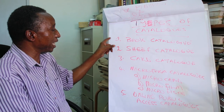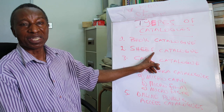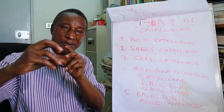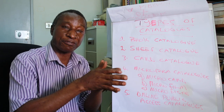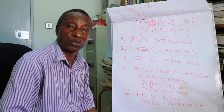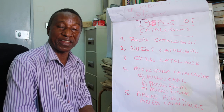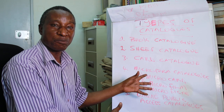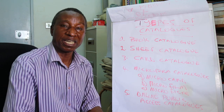Book catalogs were surpassed or replaced by the sheaf catalog. A sheaf catalog is a set of loose sheets or strips of paper where the catalog entries were written and then filed in the form of an expandable file. The advantage was that it was easy to remove an entry and replace it. These were easy to update and expand, but the challenge was that the entries could easily get soiled with heavy usage and were not very durable.